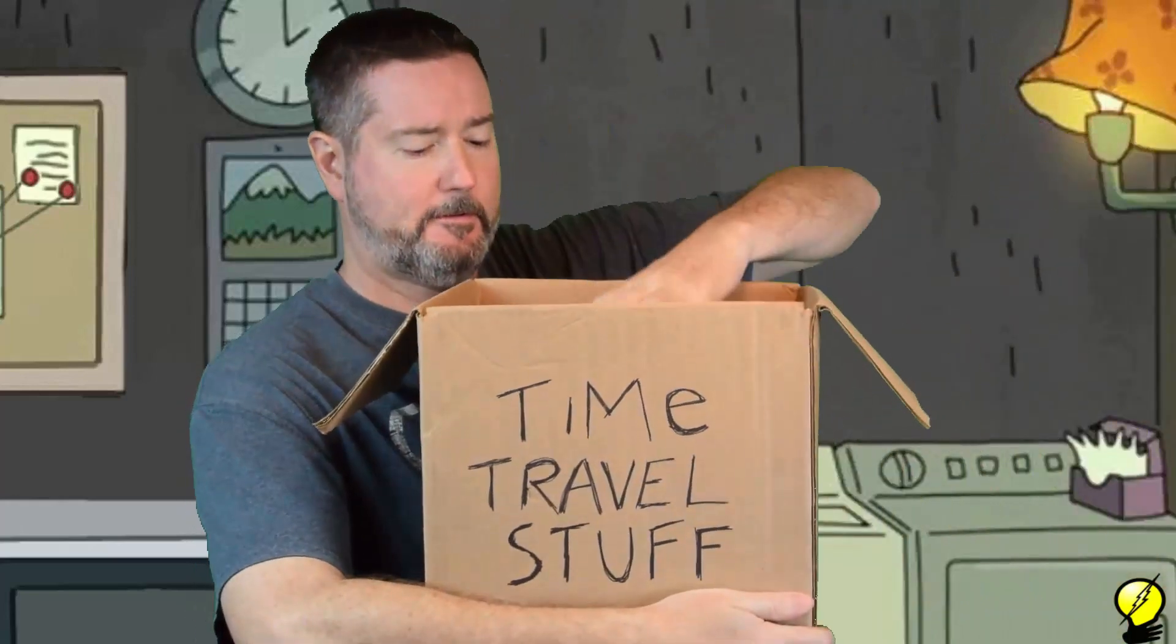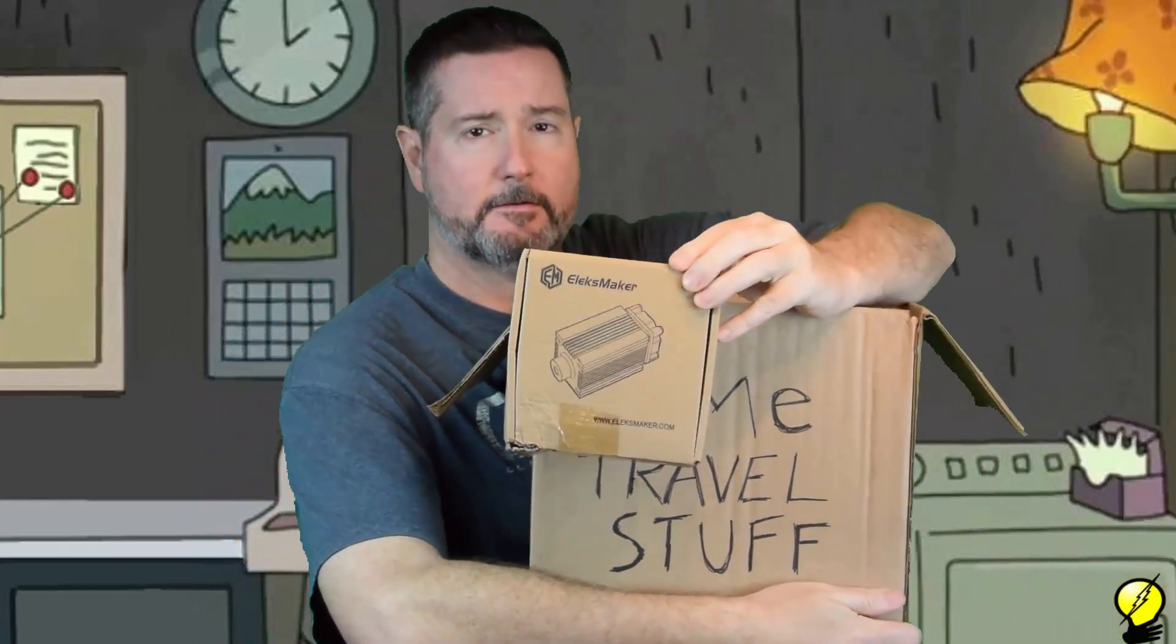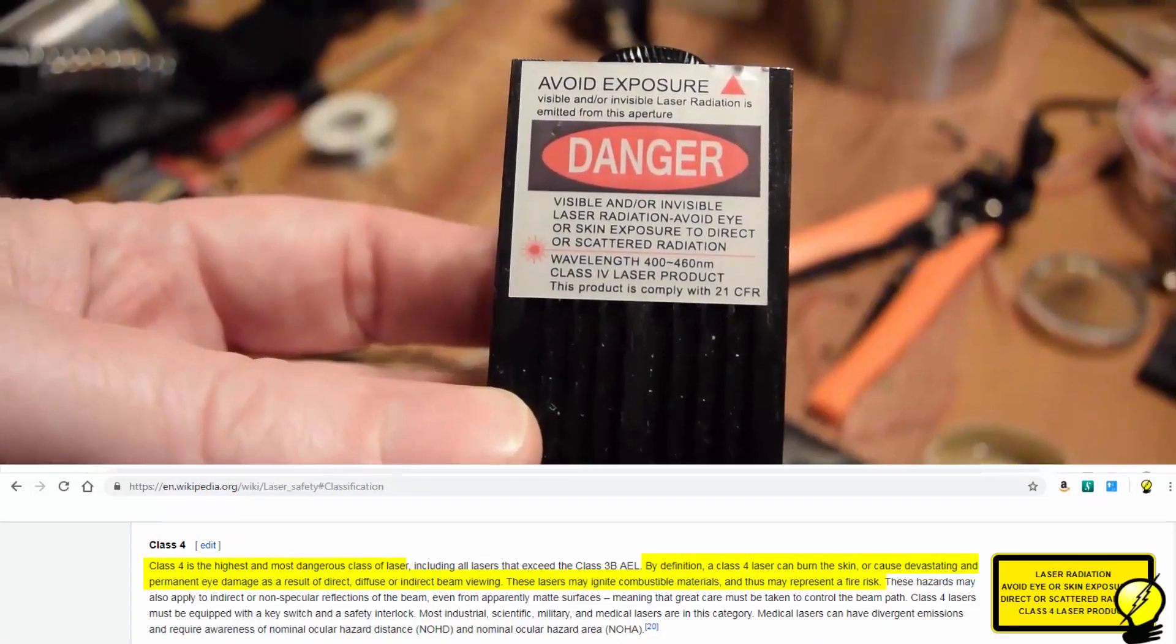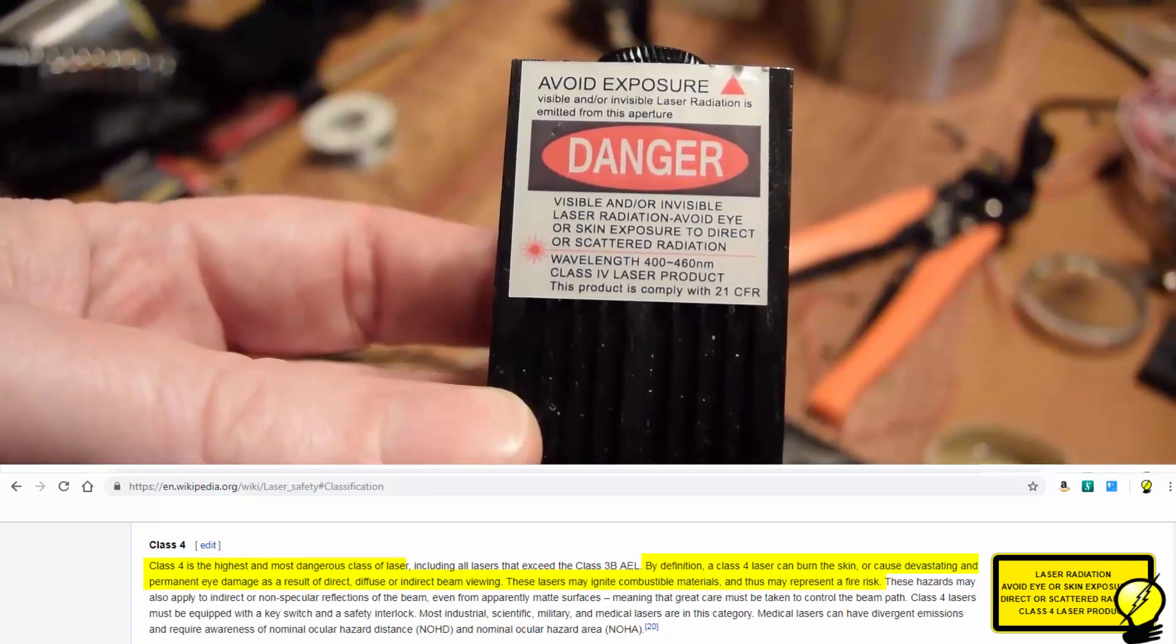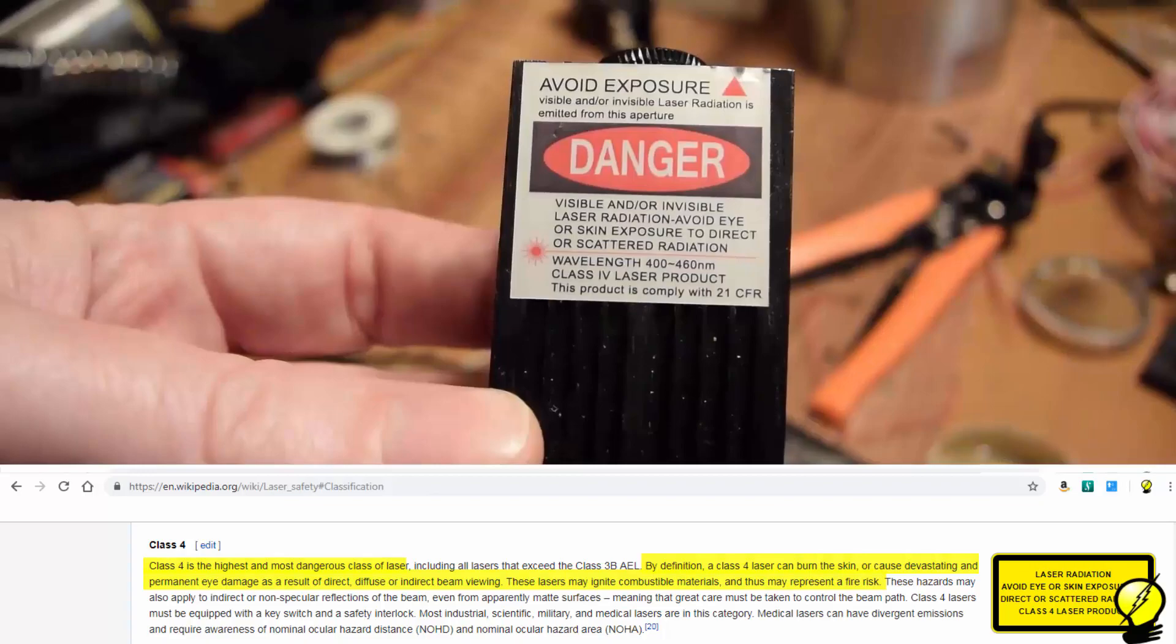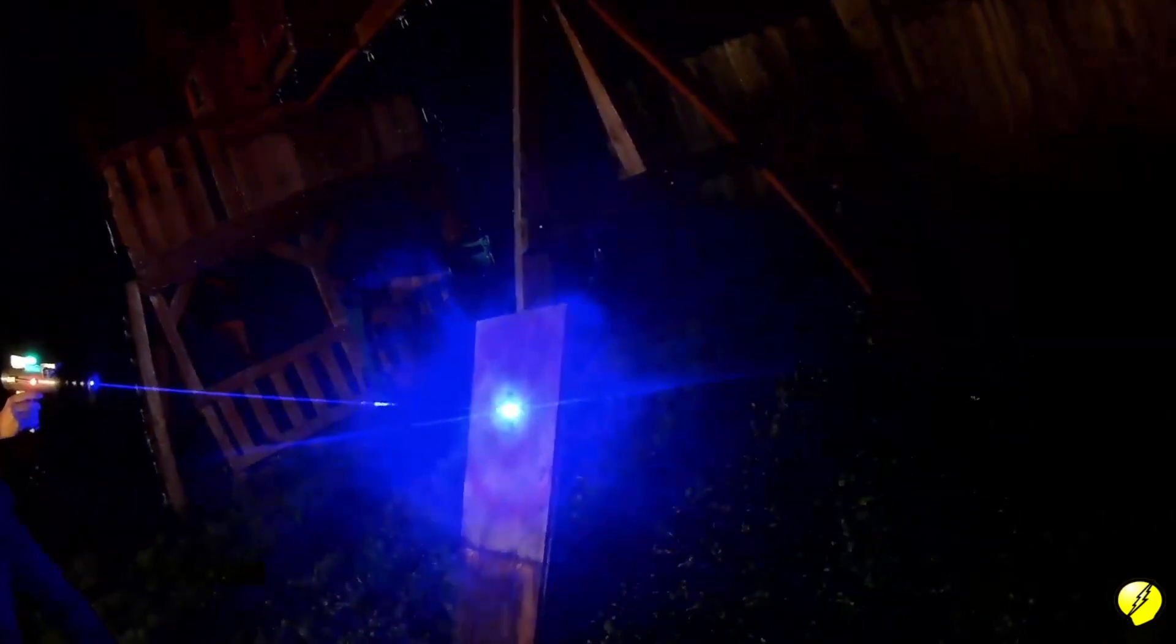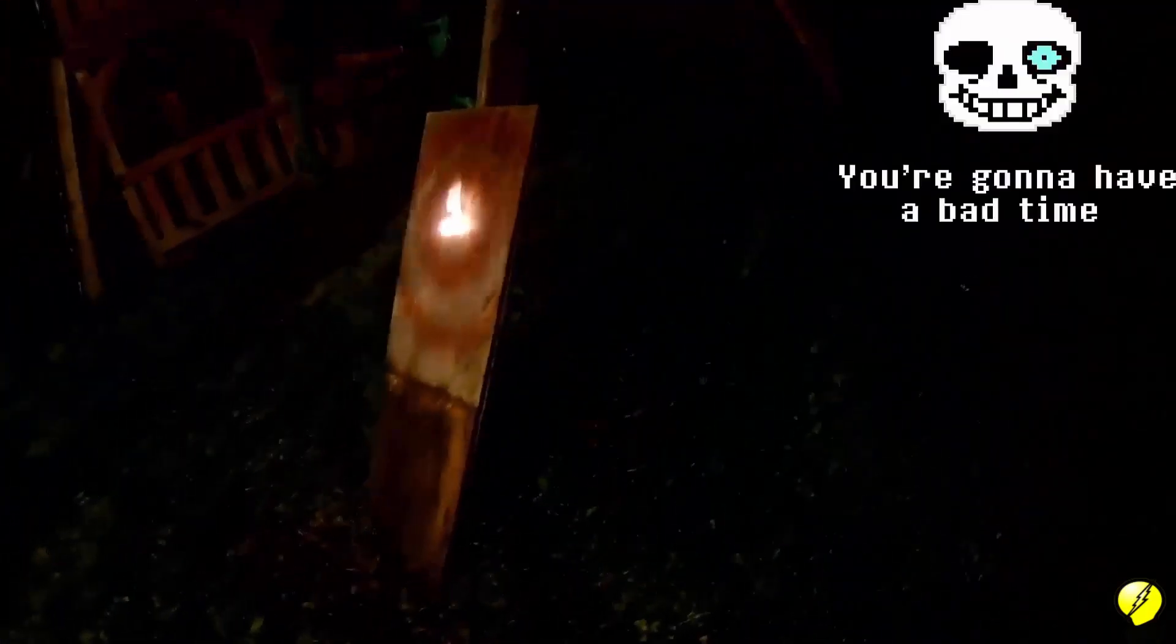I'm sure Rick won't mind if we repurposed this little guy since he's not going to be doing any more time traveling. Not since the incident. This is a class 4 laser which is the highest and most dangerous class of laser. Note that a class 4 laser can burn the skin and cause permanent eye damage. I'm not saying do not try this at home because you should totally own a laser gun. Just be careful or you're going to have a bad time.